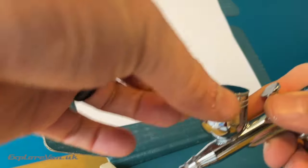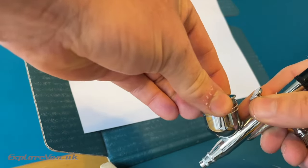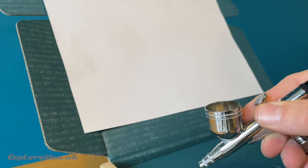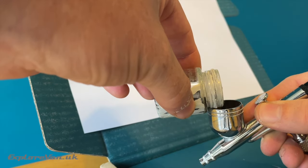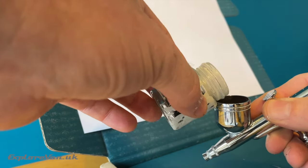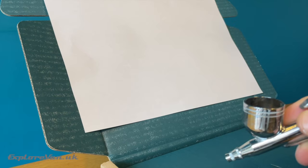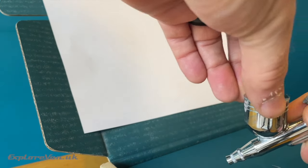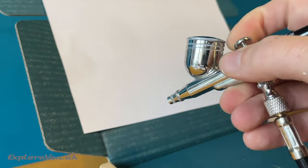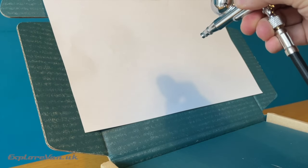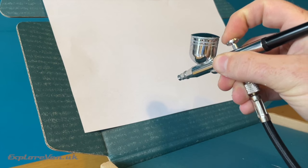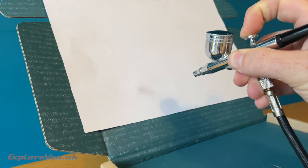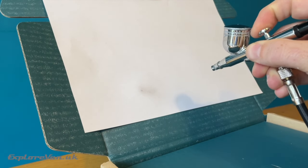The dual action airbrush is gravity fed, so you just fill the hopper with paint. The advantage of the dual action is that a push on the button starts the air but not the paint, and then pulling back on the button allows the paint to flow. This gives you the ability to control the amount of paint coming out as you paint and allows you to shut off the paint flow without shutting off the air, reducing splatter.